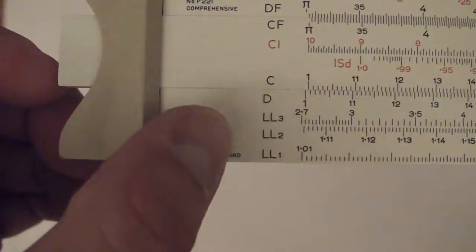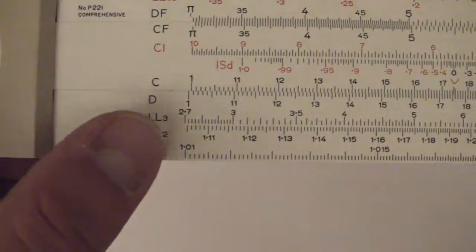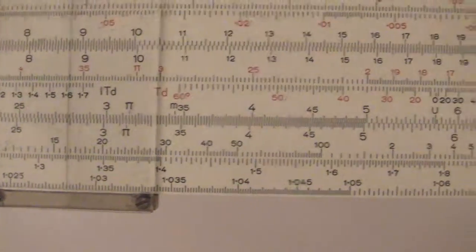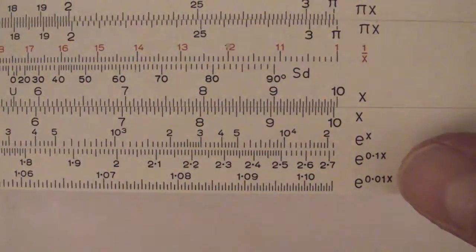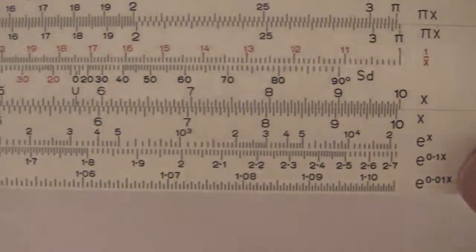So here we go, we've got these log-log scales on the bottom. I thought they were something in Welsh at first because of the double L, but they are for raising numbers to a certain power. And you can see at the end there we've got e to the x, e to the 0.1x, and e to the 0.01x.